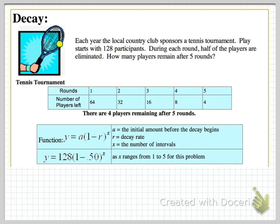Decay is similar. In this example, the number of tennis players is halving after each round. It's a knockout competition. After 5 rounds, there are 4 players remaining. The function, y equals a, open bracket 1 minus r, close bracket to the power of x.